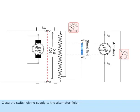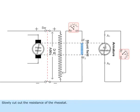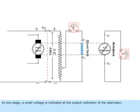Close the switch giving supply to the alternator field. Slowly cut out the resistance of the rheostat. At one stage, a small voltage is indicated at the output voltmeter of the alternator.